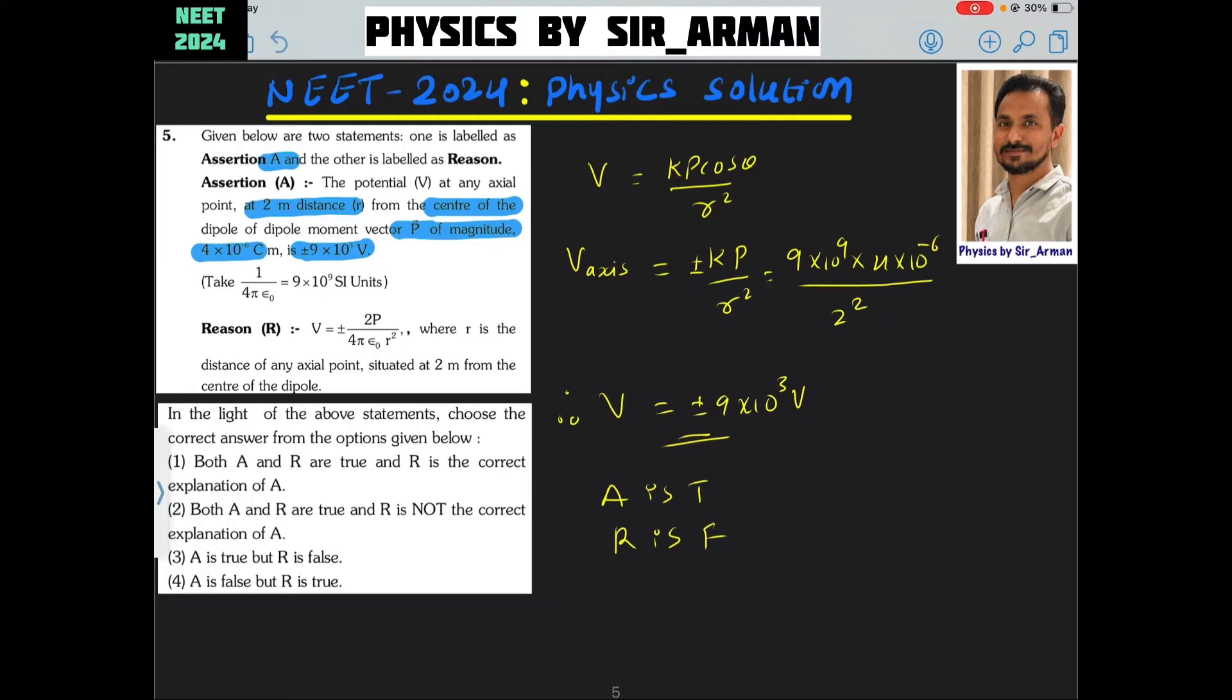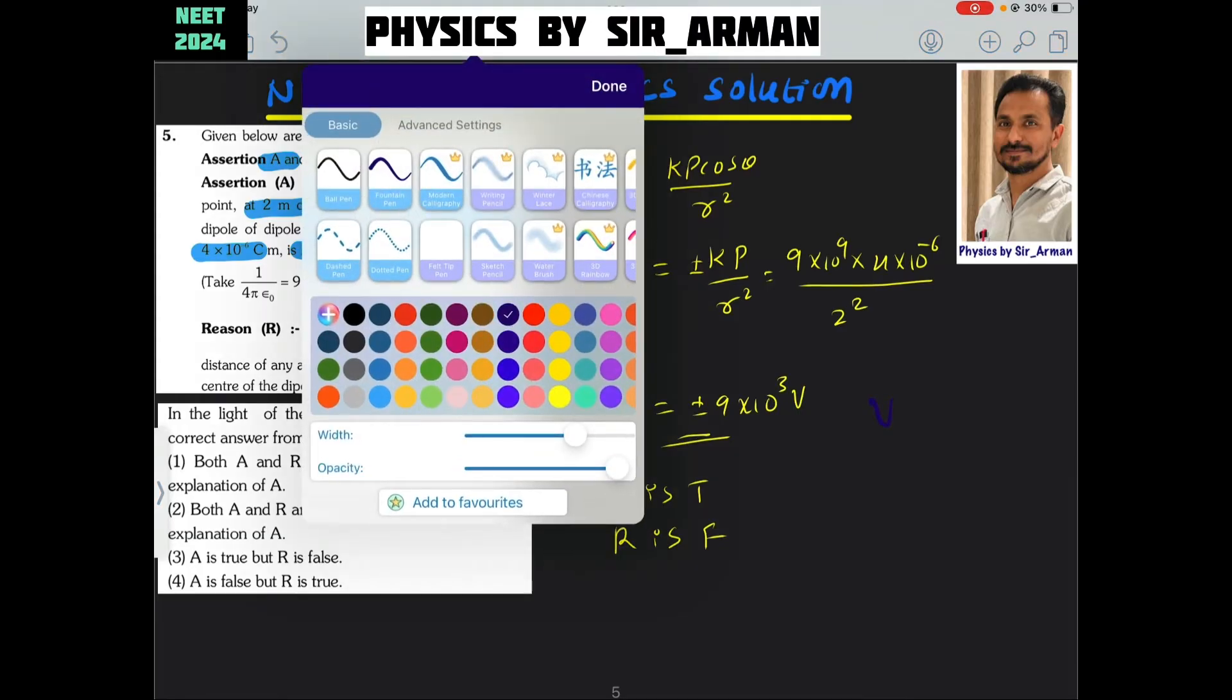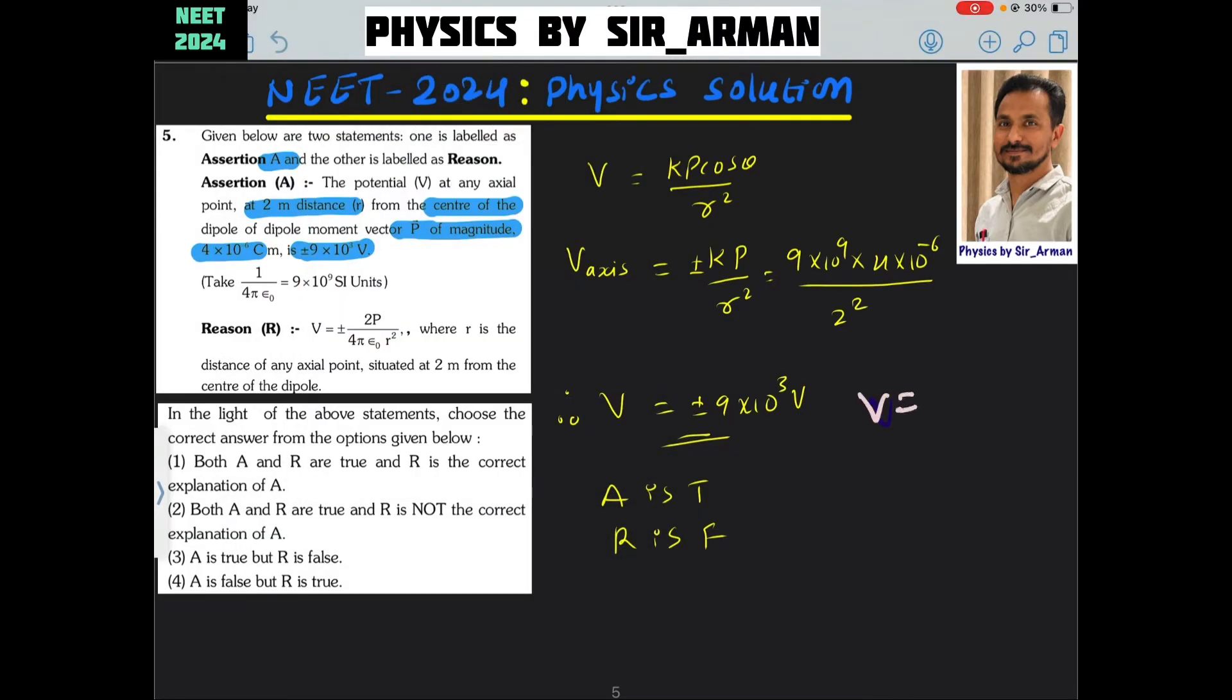For a dipole, the general equation according to our textbook is V equals to, wait a minute, V equals to K P by R square. This is the equation for the potential due to a dipole and this is the equation which are given in the other book right.